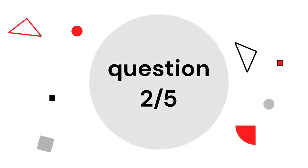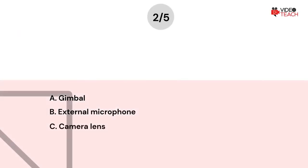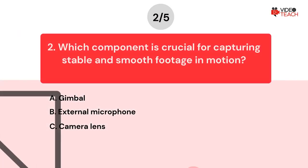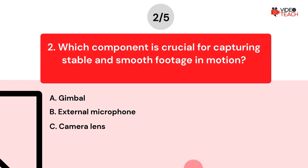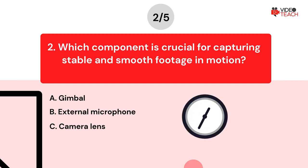Question number two. Which component is crucial for capturing stable and smooth footage in motion? Option A: Gimbal. Option B: External microphone. Option C: Camera lens. Now you have about 15 seconds to think about your answer.